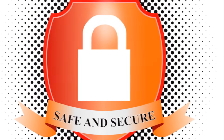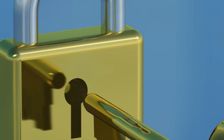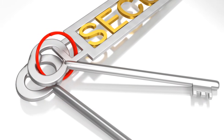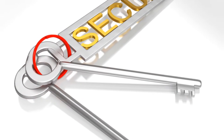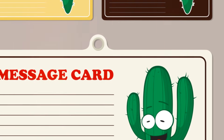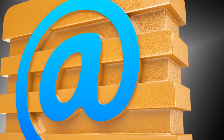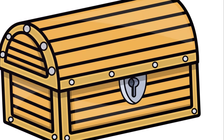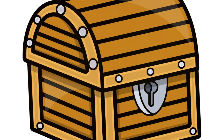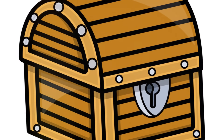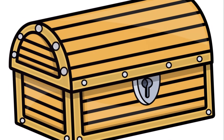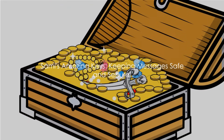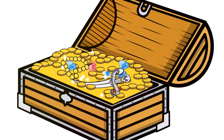But why does Saml need these keys? Well, these keys help keep the messages that Saml carries safe and secure. When someone sends a message to Saml, they lock it with Saml's public key. This way, even if a bad guy gets hold of the message, they can't read it because they don't have Saml's private key. Only Saml can unlock and read the message with his private key. So in a nutshell, the public key is like a lock that anyone can use, but only Saml's private key can unlock. This way, the messages remain safe and secure — just like a secret treasure chest. And that's the secret behind Saml's superpowers: his amazing keys that help keep the messages safe and secure.